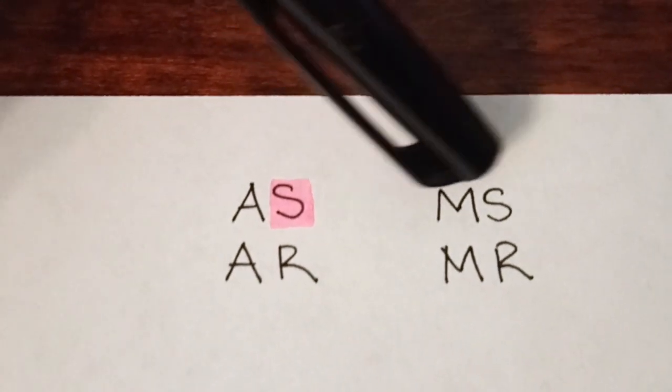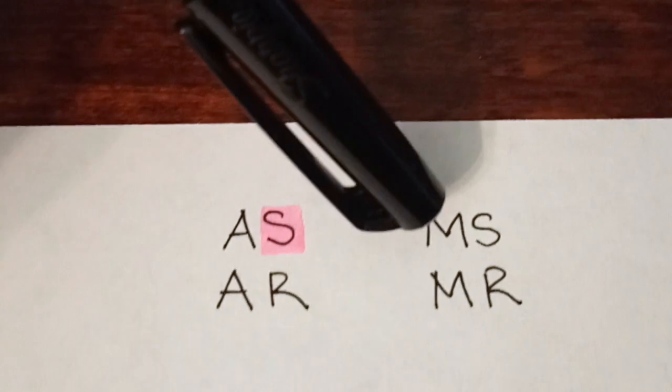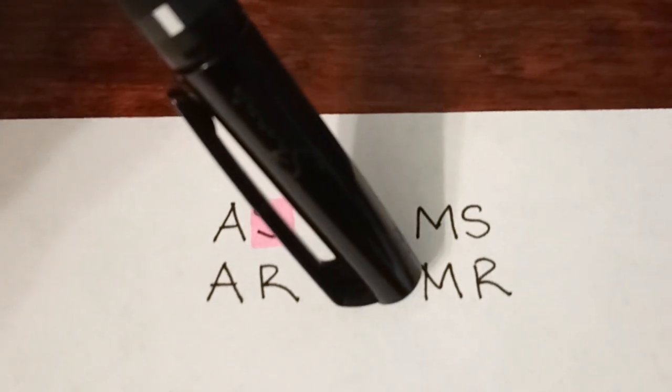Now for mitral valve, I flip it. So the mitral stenosis would actually be a diastolic murmur. And that leaves mitral regurgitation being the opposite, which is systolic.